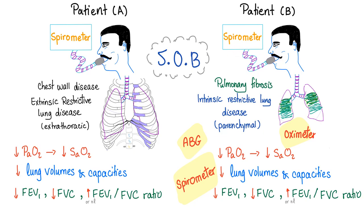Let's try spirometry. Spirometry shows decreased lung volumes and capacities in both, because both are restrictive. Decreased FEV1, decreased FVC — both. Increased ratio — both. Let's try pulse oximetry — again, decreased in both. So the ABG did not help, the pulse oximetry could not assist, and the spirometer did not do the job either. So what's the solution?